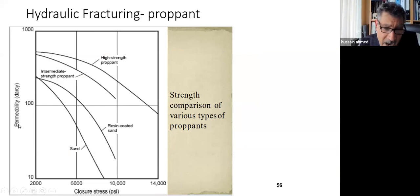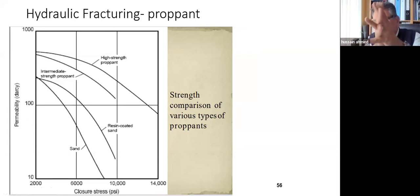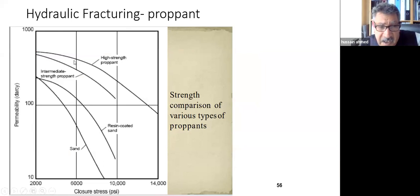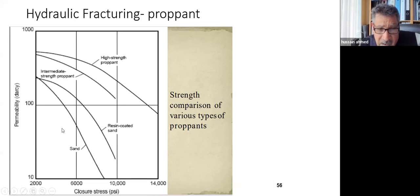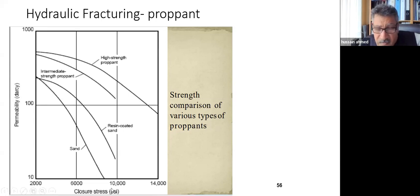This graph shows closure strength versus permeability. As you know, the more the closure strength, the less the permeability because you compress the proppant. Normal sand at 6000 PSI gives some permeability, but high-strength ceramic can give more than 500 millidarcies or even one darcy. It's very important to choose the right ceramic that won't be crushed and won't lose permeability.